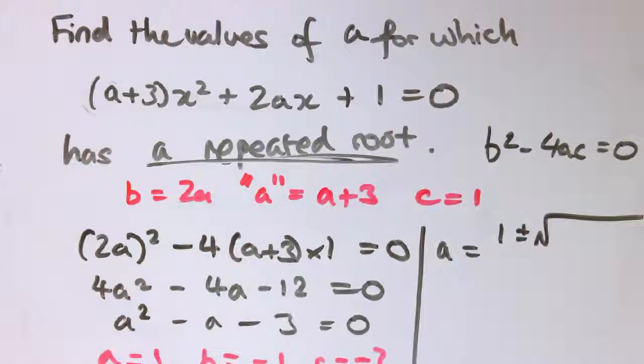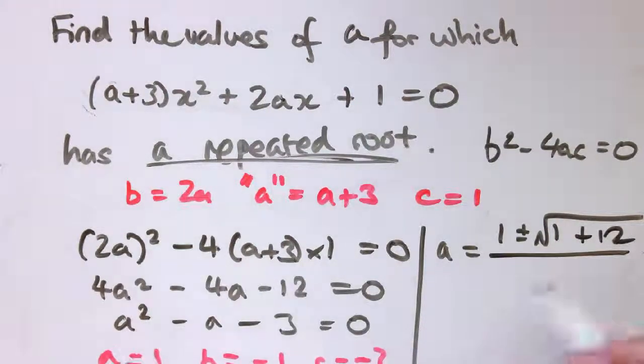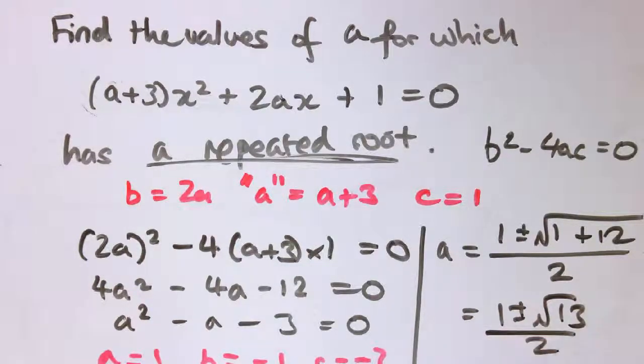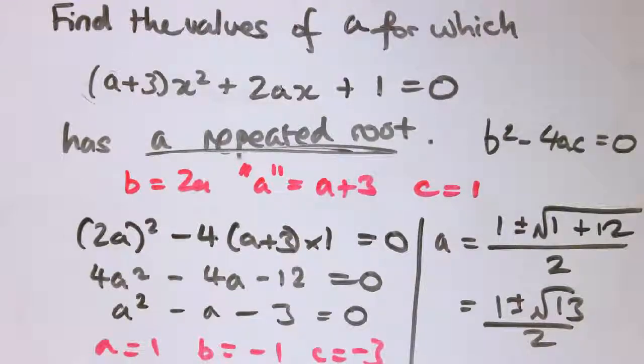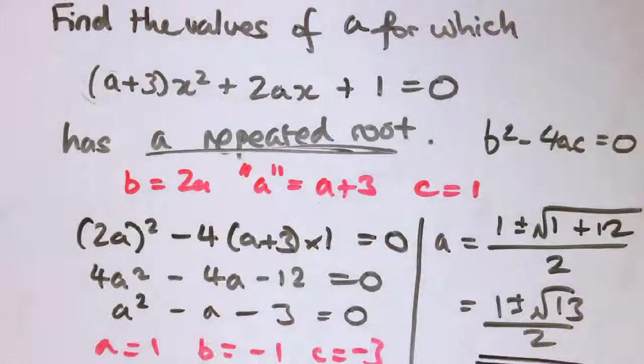So b squared is 1 minus 4 times minus 3 times 1, that's plus 12, all divided by 2 times a. So I've got 1 plus or minus the square root of 13 over 2. And if you wanted to, you could put that in the calculator and round it off to two decimal places, whatever the question asks for.